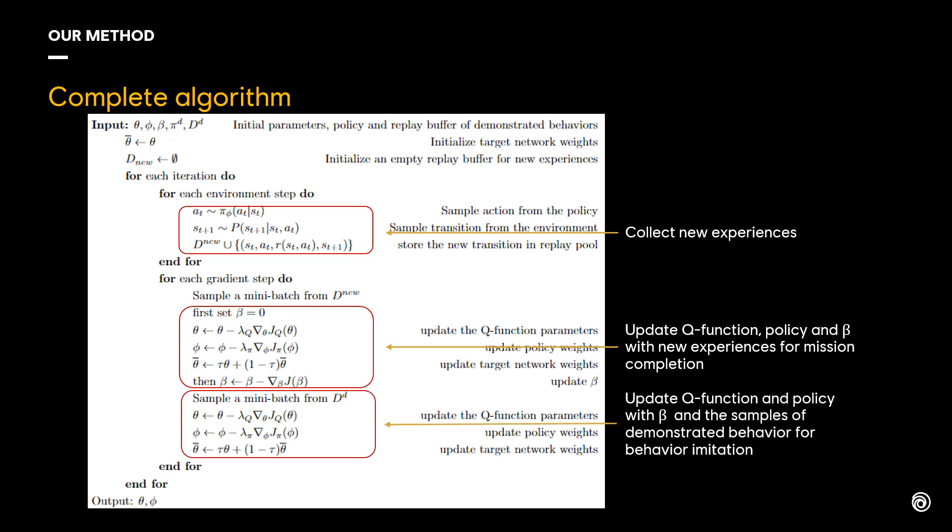The third part is to use the calculated beta and the samples of demonstrated behavior to update the Q function and policy, to encourage the agent to learn how to imitate the demonstrated behavior.